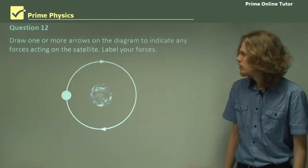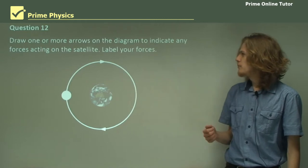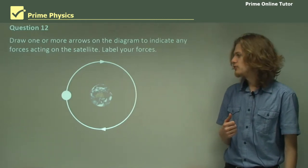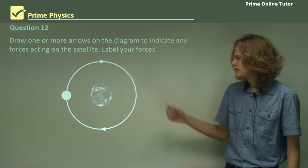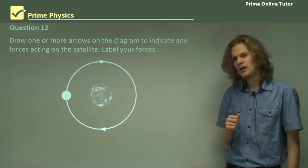Question 12. Draw one or more arrows on the diagram to indicate any forces acting on the satellite, which is obviously this little white circle. Label your forces.